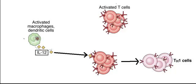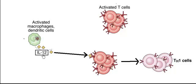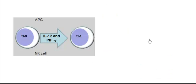So you see how T helper 1 cells are produced. These activated cells are binding either to interleukin 12 produced by activated macrophages, or they are binding to interferon gamma which is produced by natural killer cells, and both of them will activate the T cells to become T helper 1 cells. Also note that interleukin 12 is an inflammatory cytokine.